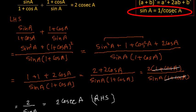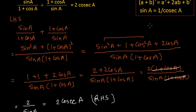Here we can see that cosec a and sine a are reciprocal of each other, so 1 by sine a will be equal to cosec a. That is how we got sine a by 1 plus cos a plus 1 plus cos a divided by sine a is equal to 2 cosec a. After this we have a few more problems with increasing difficulty, so keep watching MathSmart and bye-bye till then.